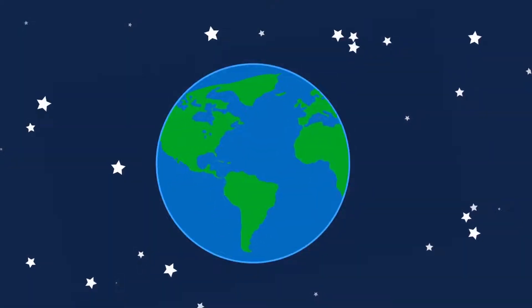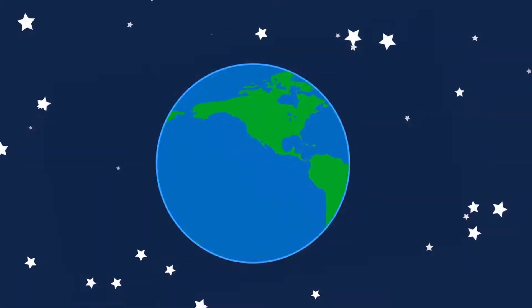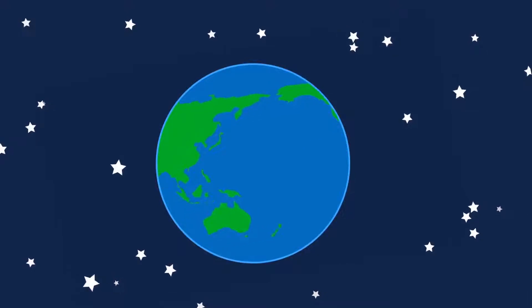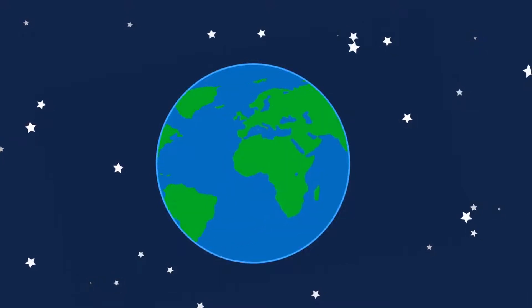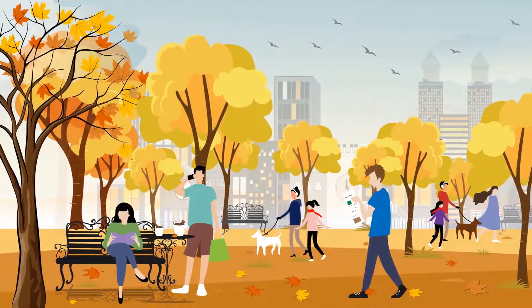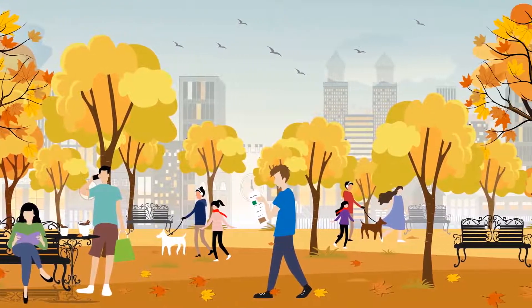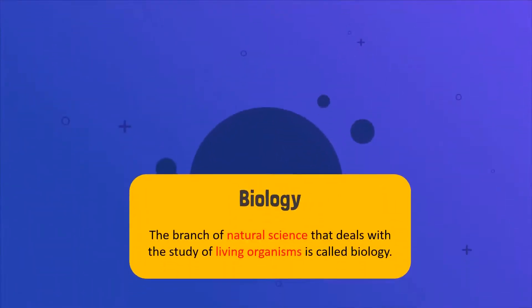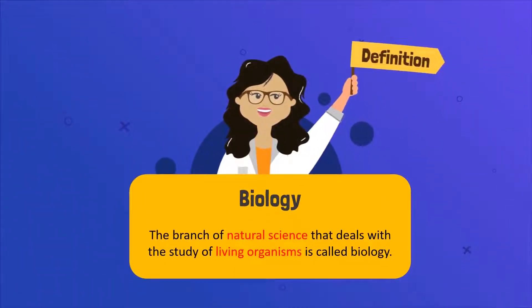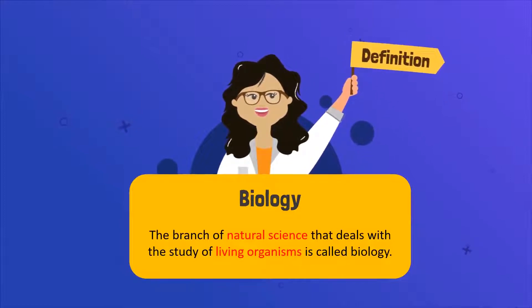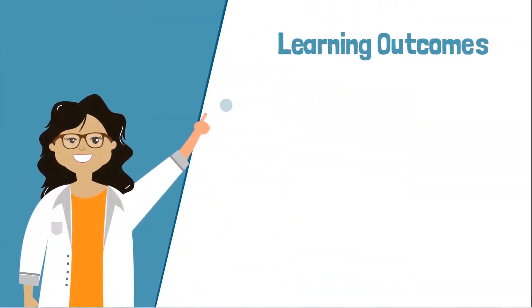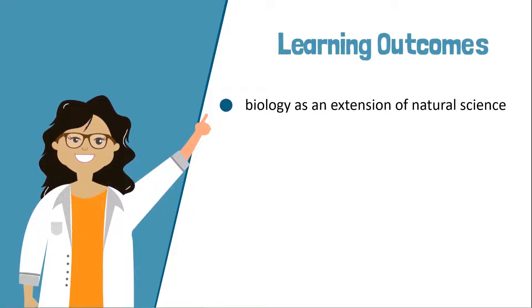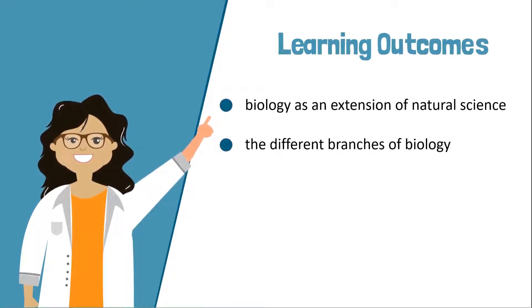Earth, to the best of our knowledge and understanding, is the only planet that has living organisms. Their diversity simply cannot be overstated. The branch of natural science that deals with the study of living organisms is called biology. In this video, we will learn about biology as an extension of natural science and the different branches of biology.